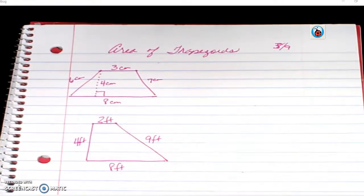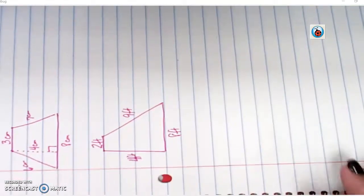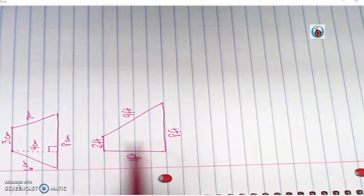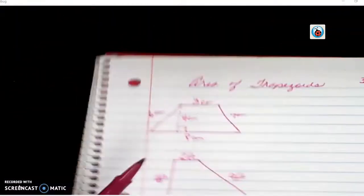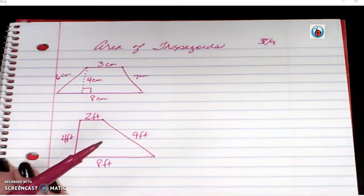But remember, trapezoids look a lot of different ways. A trapezoid could be sitting like this, so that your parallel sides are right and left. It can be spun. As long as it has opposite sides, one set of opposite sides that are parallel, it's a trapezoid.